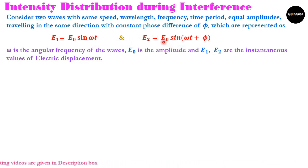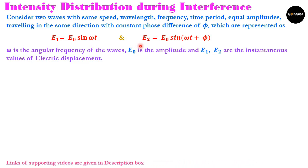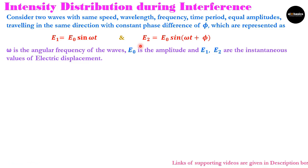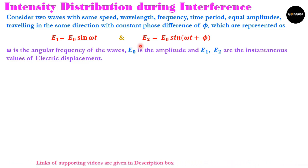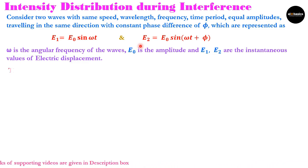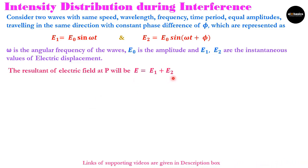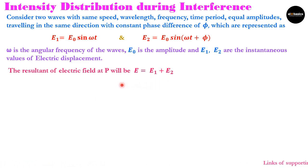E0 is the amplitude, which is also the same for both waves, and E1 and E2 are their instantaneous values of electric displacement. When these two waves travel in the same direction, they interfere with each other, and their resultant displacement is given by E = E1 + E2, since we are considering electric field.